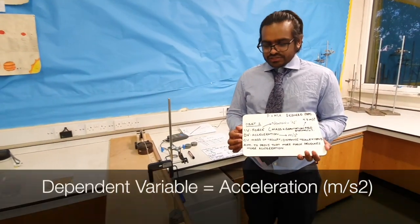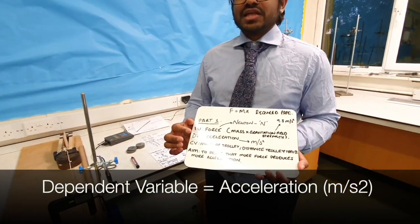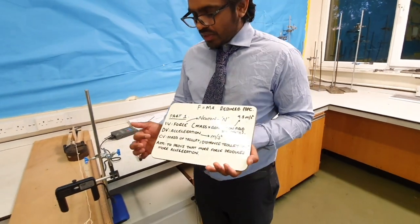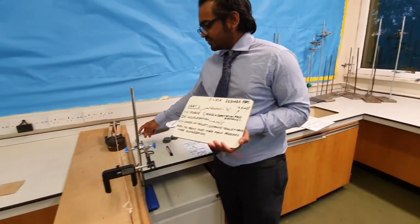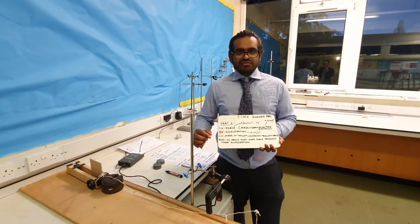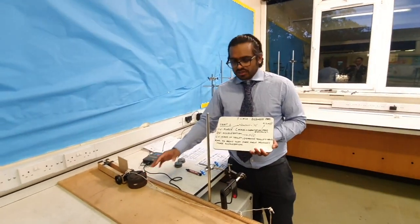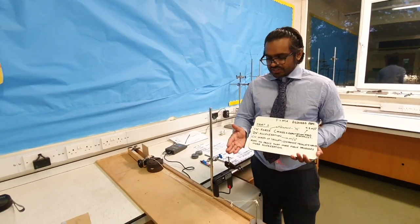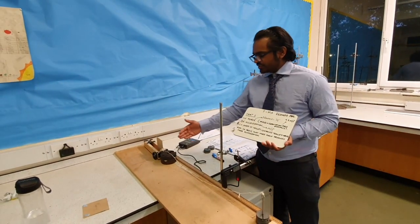Our dependent variable is acceleration, that's what we're measuring. Our control variable is the mass of the trolley. The other control variable we keep constant is the distance travelled by the trolley. We're going to measure our distance from the light gate to the start of the trolley.